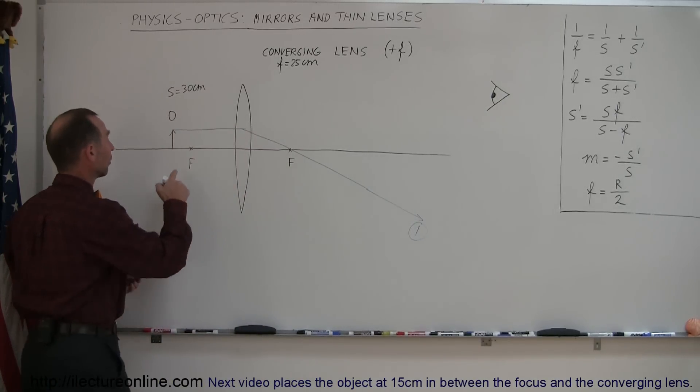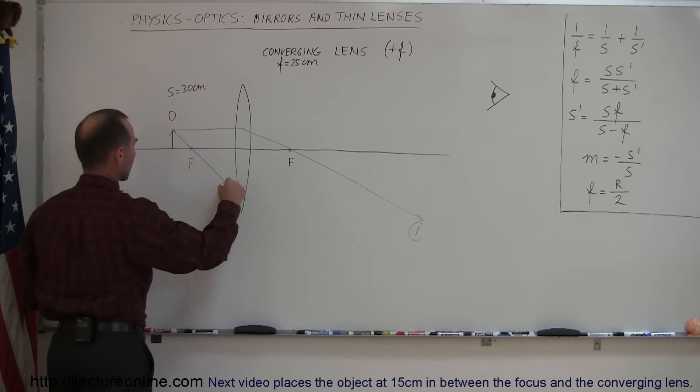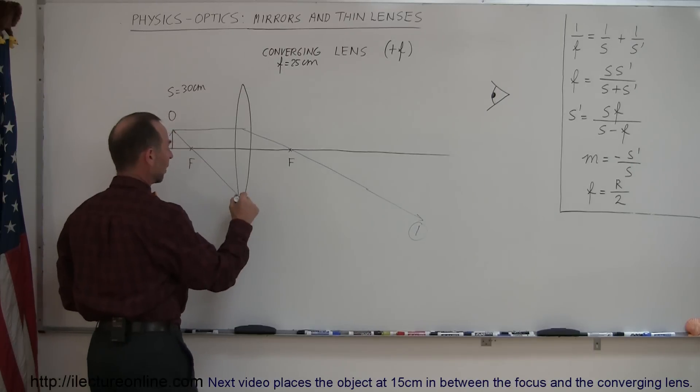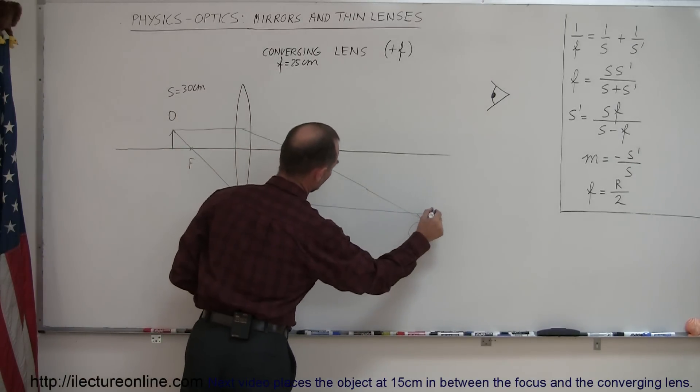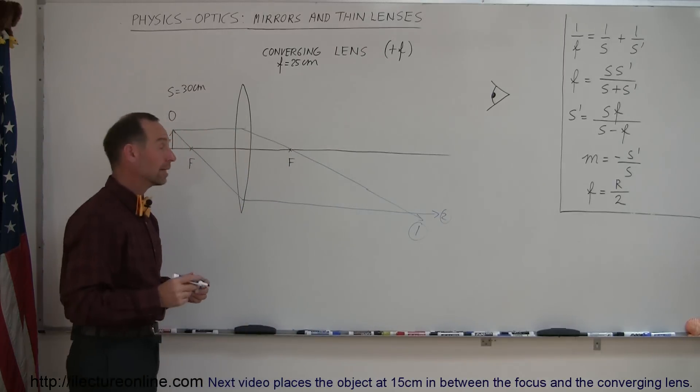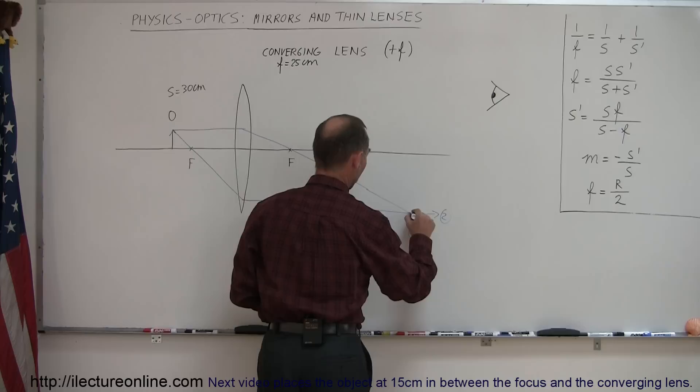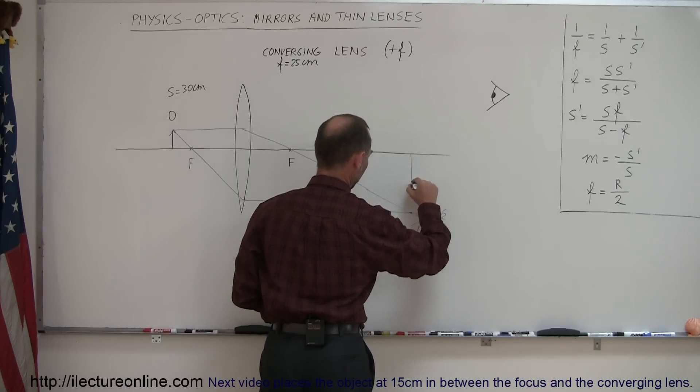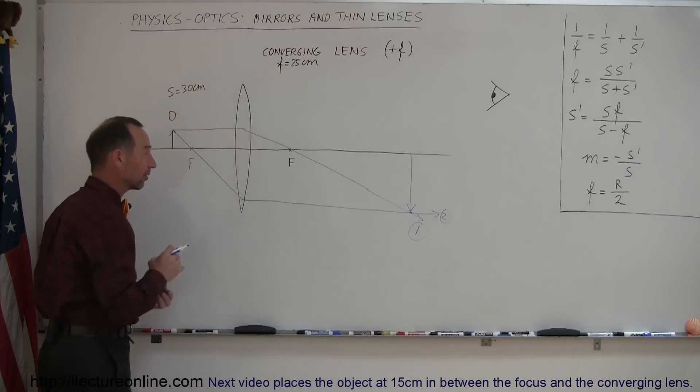Ray number two is from the tip of the object to the focal point to the lens. When it reaches the lens, it bends, it refracts, and then continues on parallel to the normal. And it goes out like that, ray number two. And they do meet on the other side of the lens, which means we have another real image.